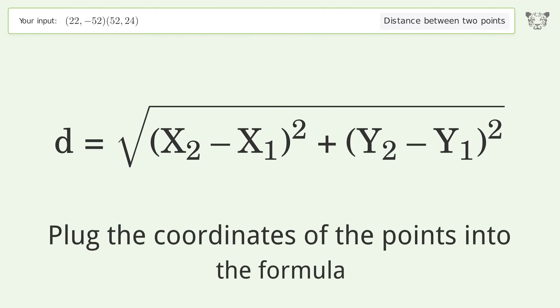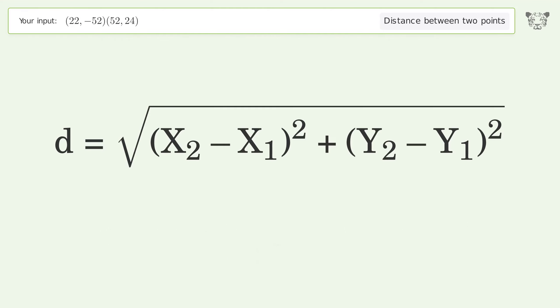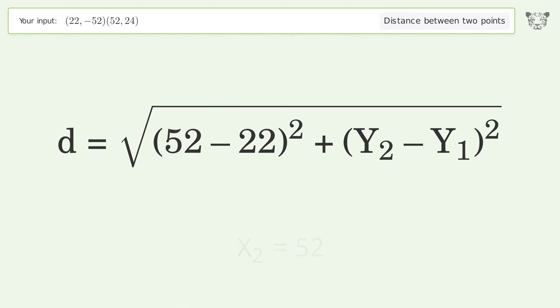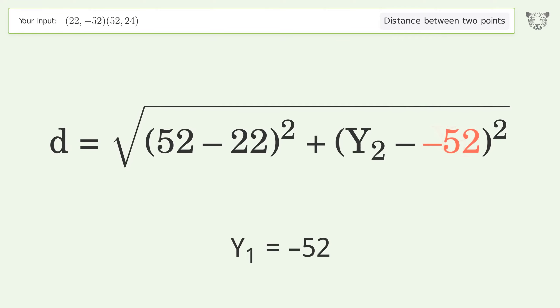Plug the coordinates of the points into the formula. x1 equals 22, x2 equals 52, y1 equals negative 52, y2 equals 24.